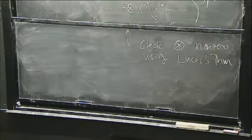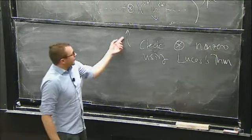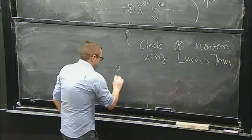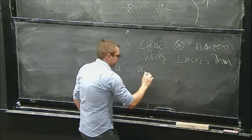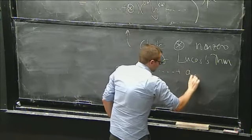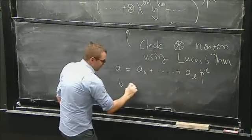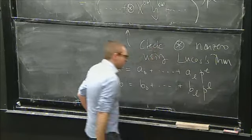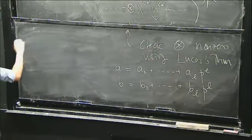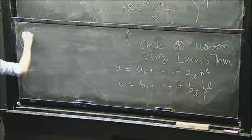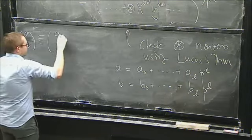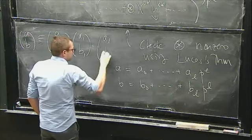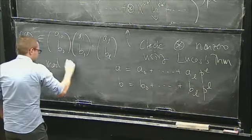To that end, let's recall Lucas' theorem, which gives a way of telling what binomial coefficients look like mod p. If I have a binomial coefficient C(a,b) and I write a in its base-p expansion — same with b — then Lucas' theorem says that C(a,b) ≡ C(a_0,b_0) · C(a_1,b_1) · ... mod p.